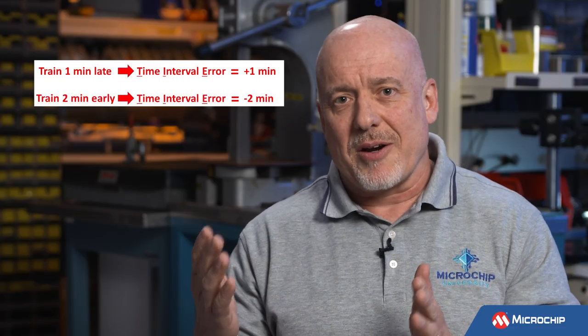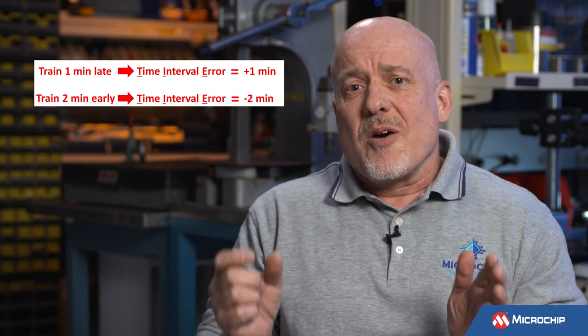Let's take the example of a train that's scheduled to leave at 8 o'clock in the morning every day of the week, every day of the year. The event is the train departing the station, and the time interval between the event occurring again is one day or 24 hours. But what if on one day the train leaves at 8:01 AM? The time interval is now one day and one minute — one minute longer than it's supposed to be. So the time interval has an error, a time interval error, sometimes abbreviated as TIE, of one minute.